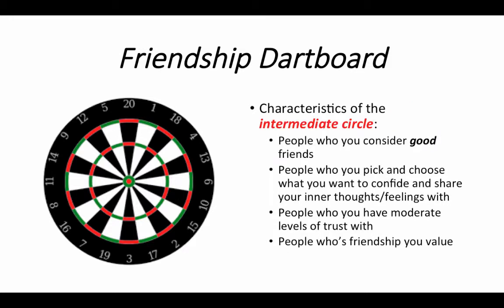Now let's talk about the intermediate circle. The intermediate circle is the blue and green alternating circle — smaller than the outer one but not the bullseye. You're going to notice it is many times larger than the bullseye because you'll have more friends in your intermediate circle than your inner circle. And it's not as big as your outer circle because you'll have more select people in your intermediate circle than in your outer circle.